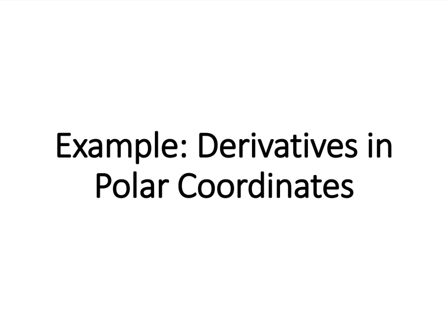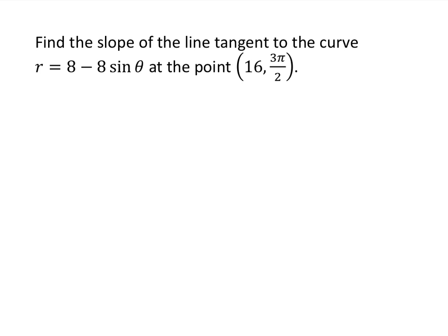In this video we'll see an example of how to find the slope of a tangent line using derivatives in polar coordinates. This will be a two-part question. We want to find the slope of the tangent line to the curve r equals 8 minus 8 sine theta, at the point (16, 3π/2).